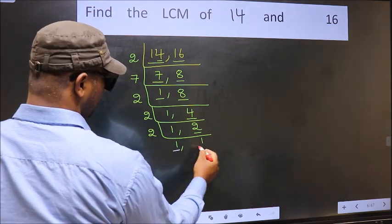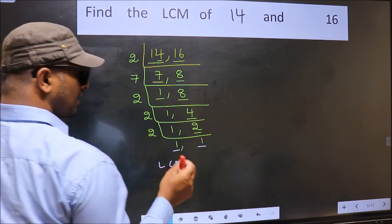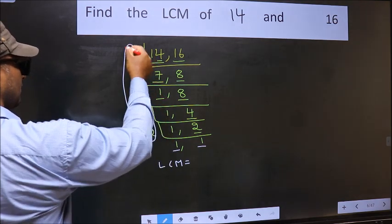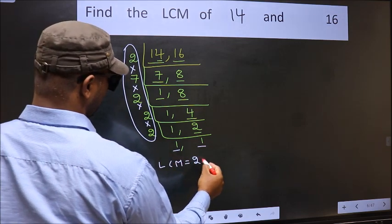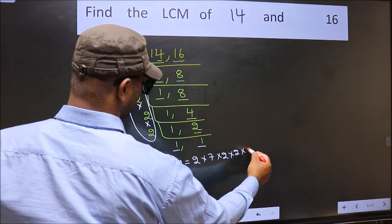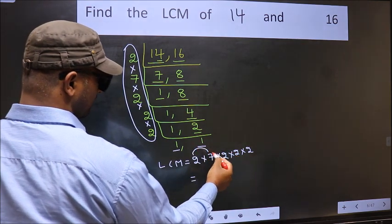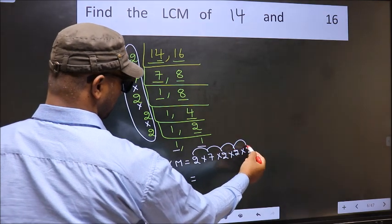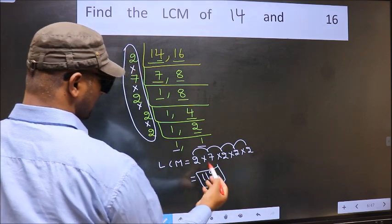So we got 1 in both the places. So our LCM is the product of these numbers. That is 2 into 7 into 2 into 2 into 2 into 2. So let us multiply these: 2 into 7 is 14, into 2 is 28, into 2 is 56, into 2 is 112. So 112 is our LCM.